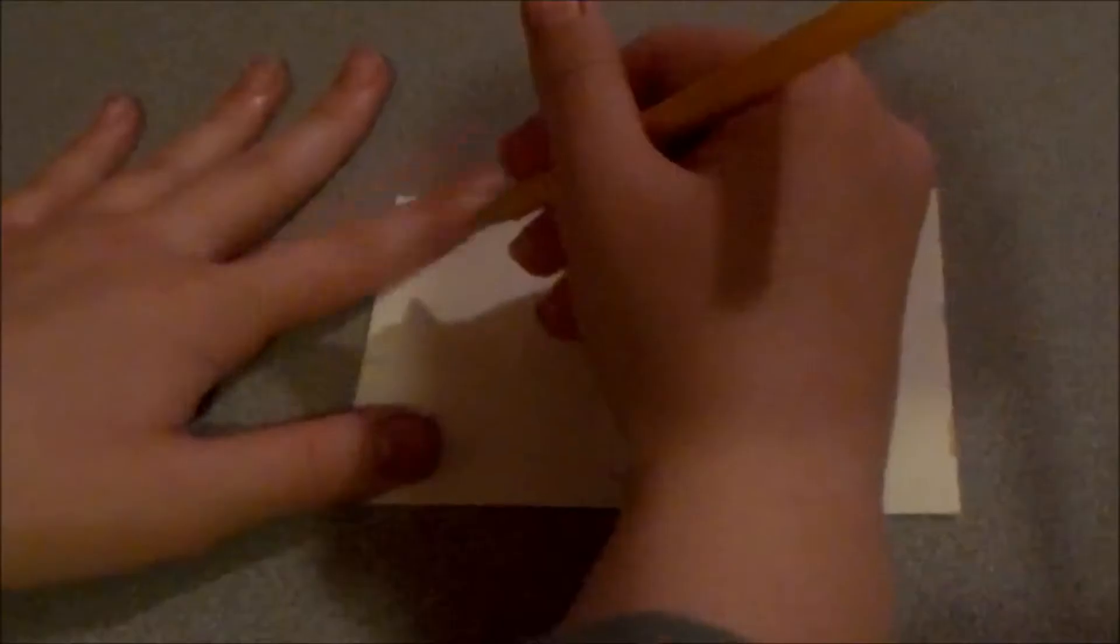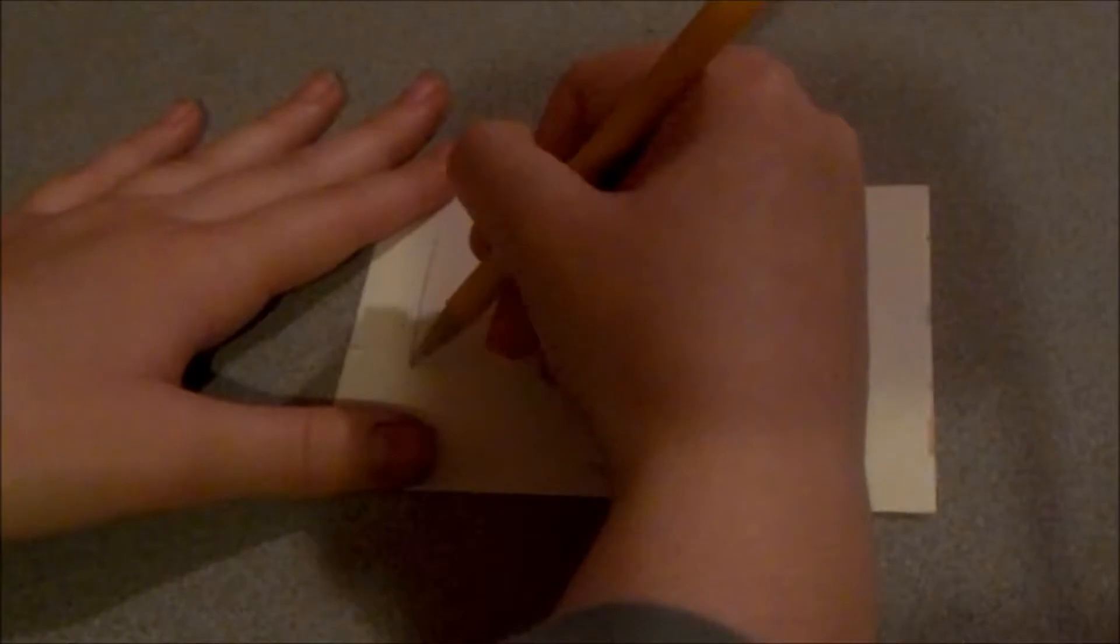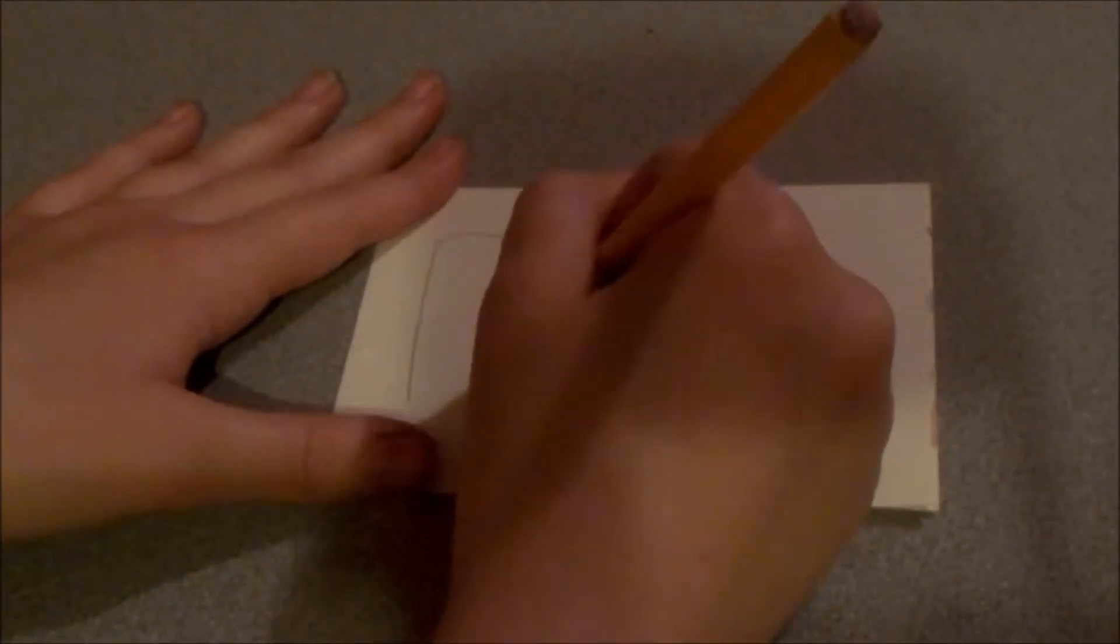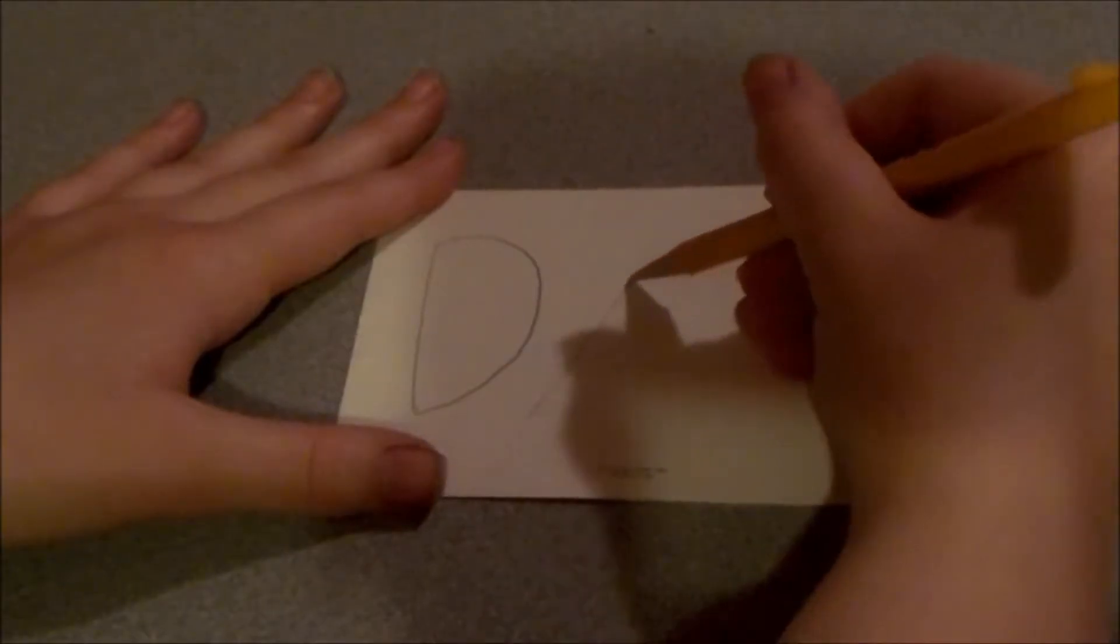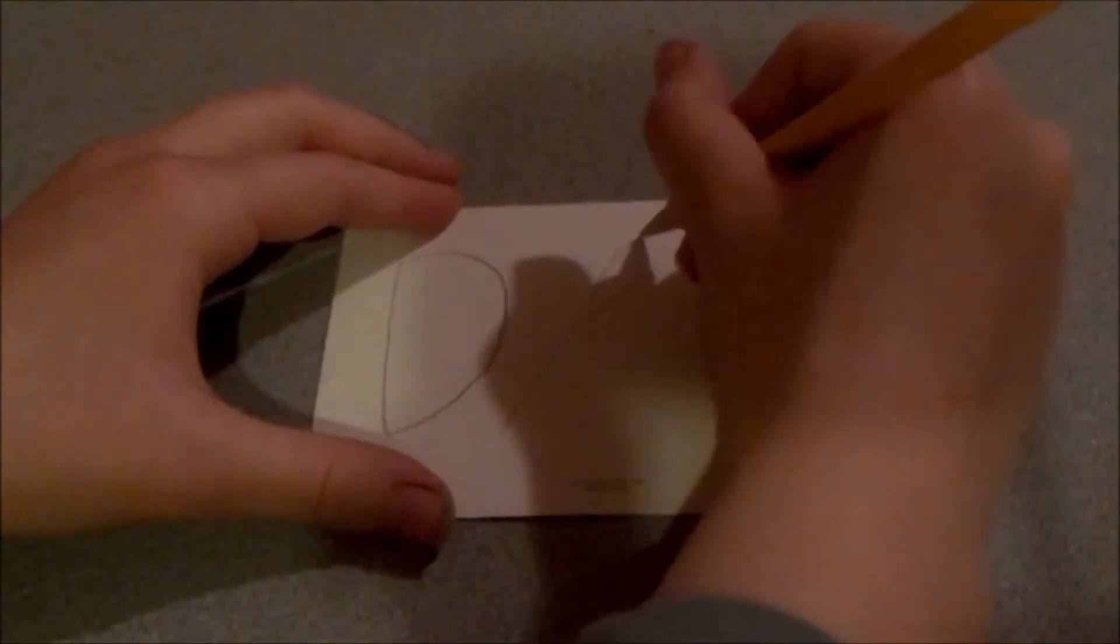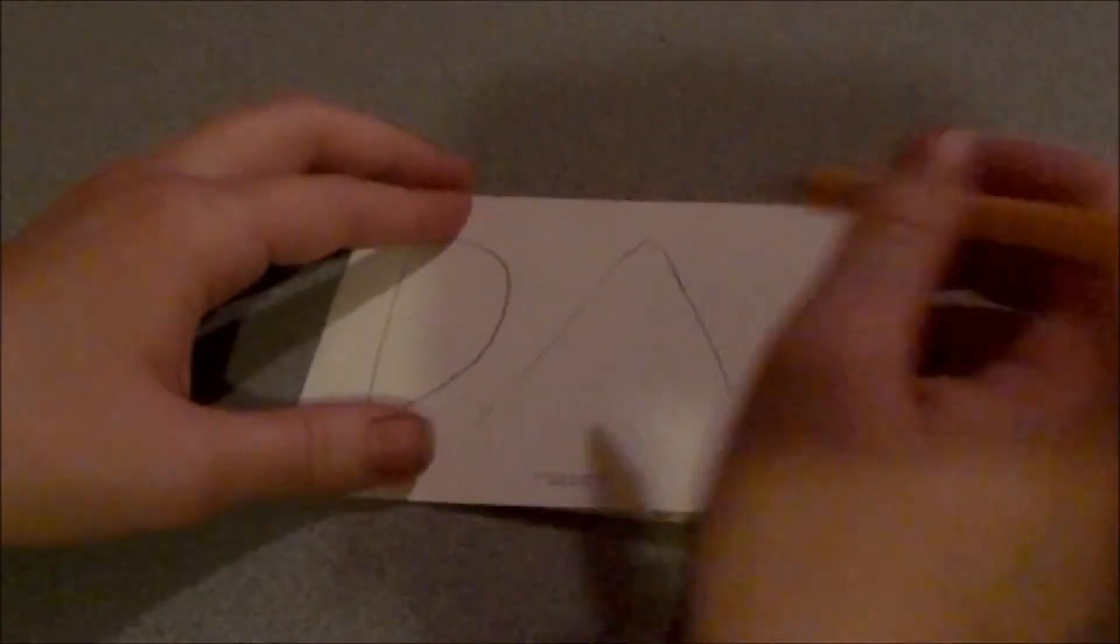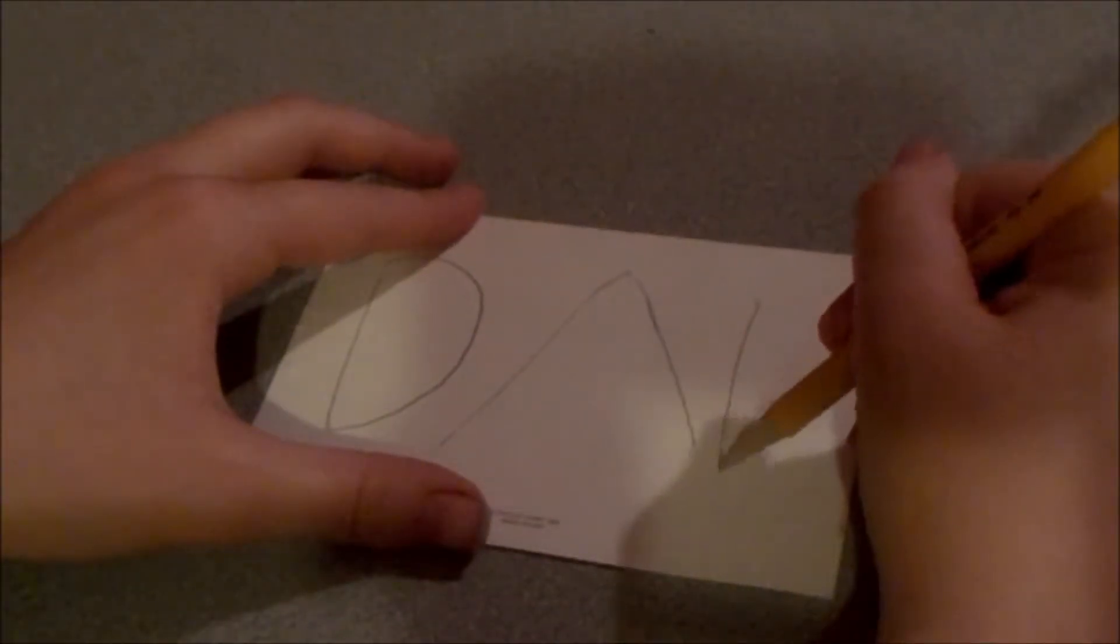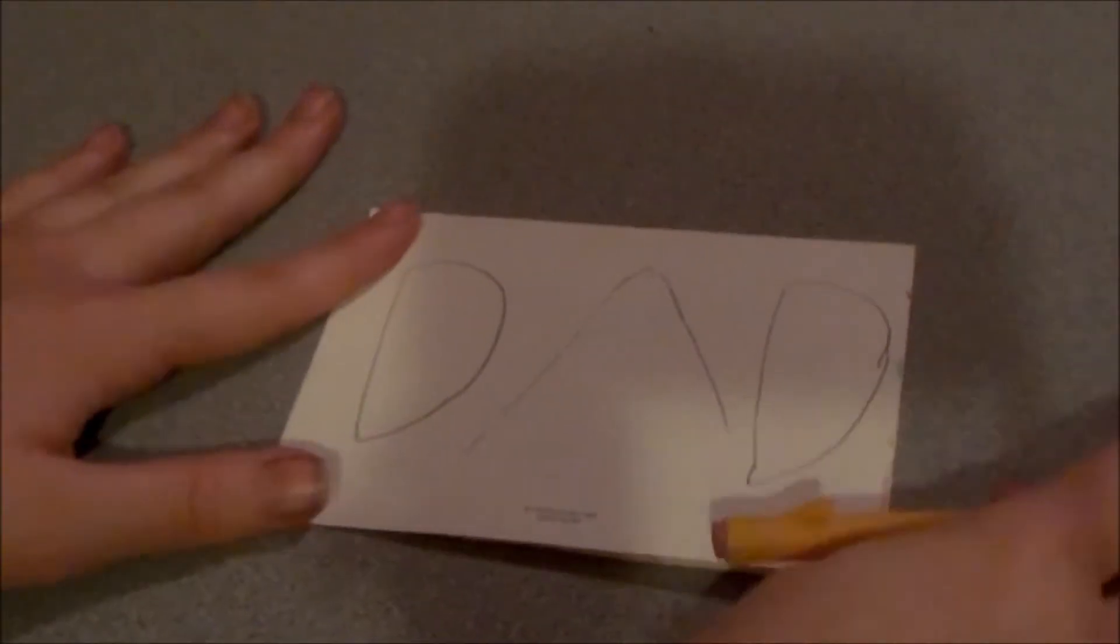So, the first technique that I'm going to show you guys is going to be block letters. So, you're going to start by making the outline of a D. I'm doing dad by the way. Just right there. Straight basic. And now we're going to do an outline just like that. Down. And now we're going to draw another D. So, this is our simple outline.